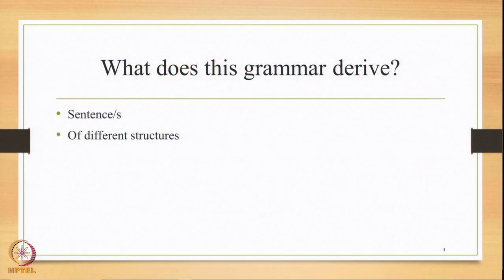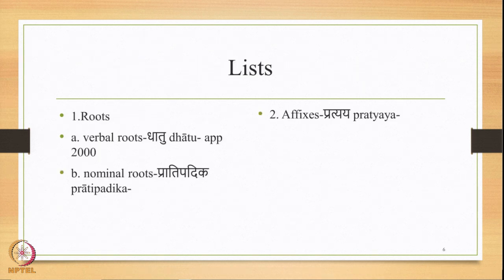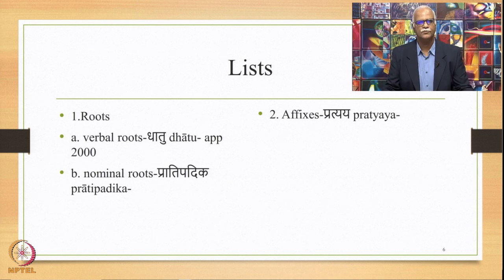Let us take a recap and try to understand what this grammar derives. The answer is that this grammar derives sentences — groups of sentences of different, varied structures. This is what this grammar derives. This grammar is composed of lists, also known as lexicon, and a set of rules. The lists are of two types: a list of roots and a list of affixes.